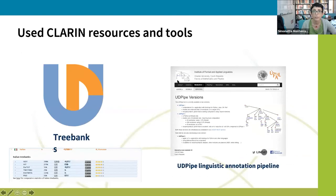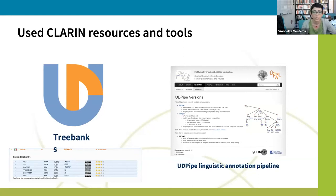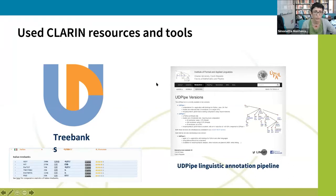The resources and tools shared through CLARIN that we use in our course include the Universal Dependencies treebanks — a big effort to build a unique annotation schema to annotate multilingual treebanks. So far, we have more than 150 treebanks for about 90 languages. We also use UDPipe, the Linguistic Annotation Pipeline developed at Charles University in Prague.